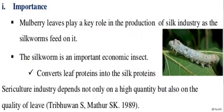Bombyx mori is the silkworm. As studied in the fiber-to-fabric chapter, the silkworm is an important economic insect which converts leaf protein into silk protein - it feeds upon leaf protein and converts it into silk protein. The sericulture industry depends not only on the quality of the silk but also on the quality of the leaf. If the quality of the leaf is good, the silk produced will also be of good quality.